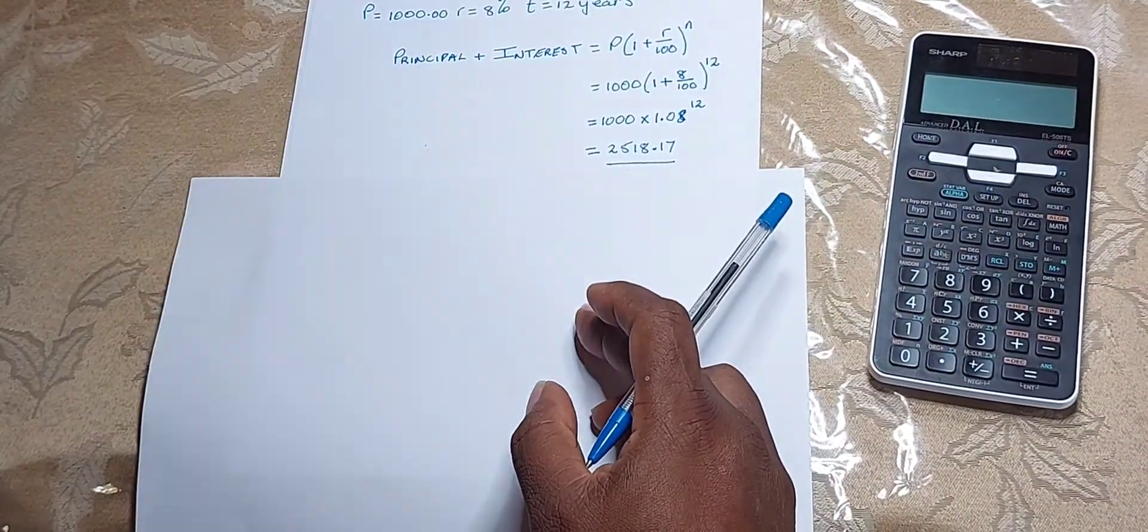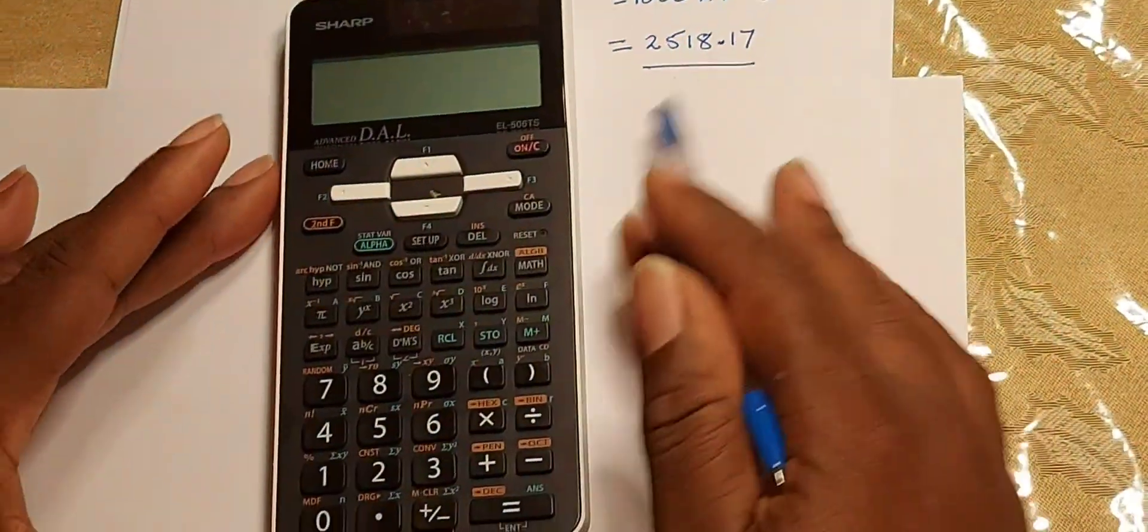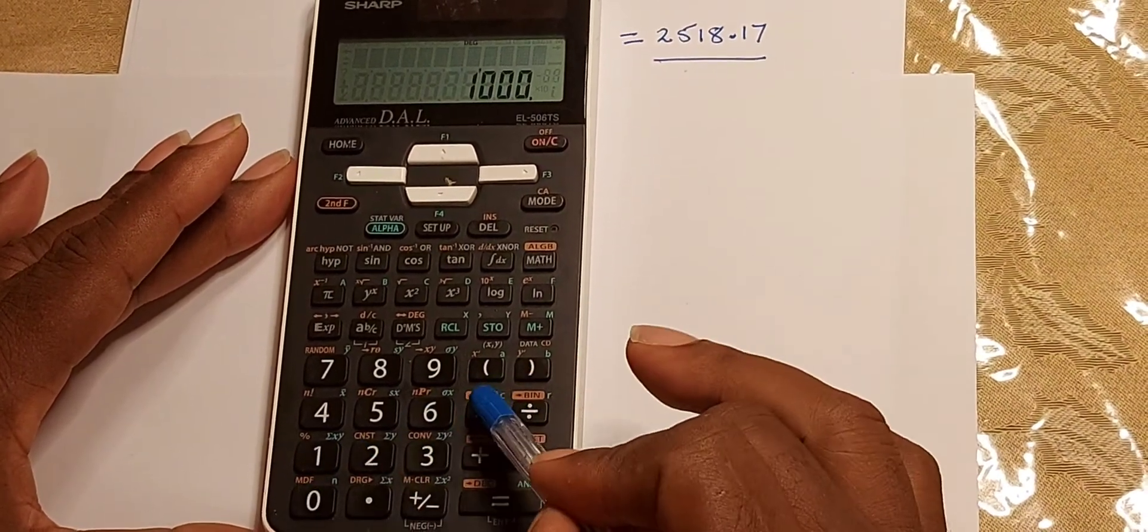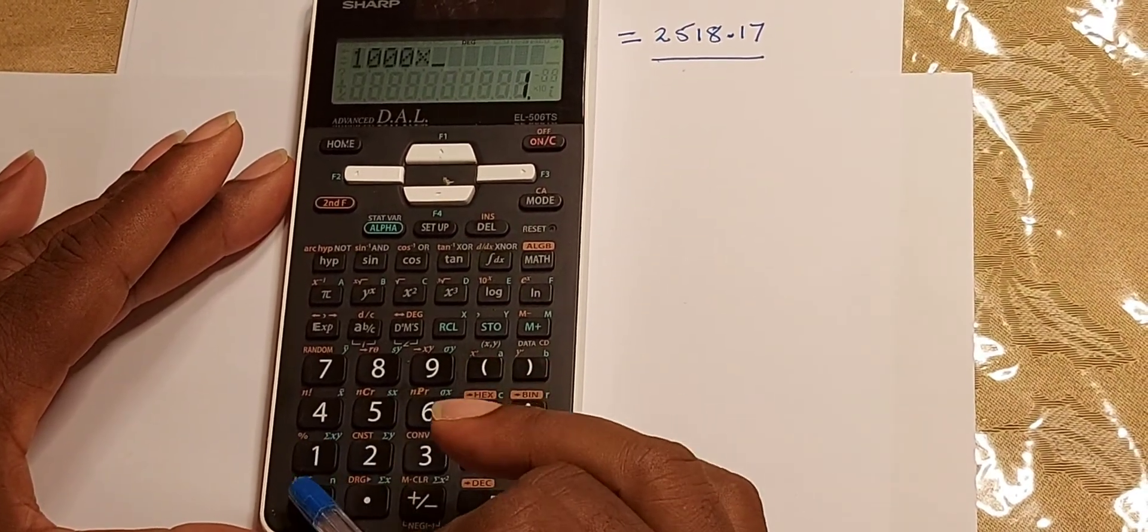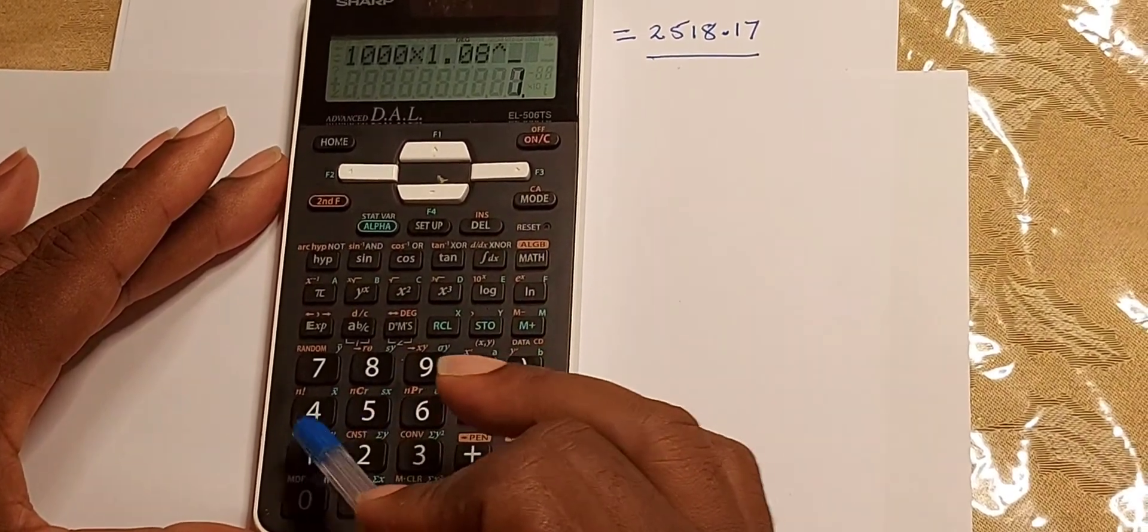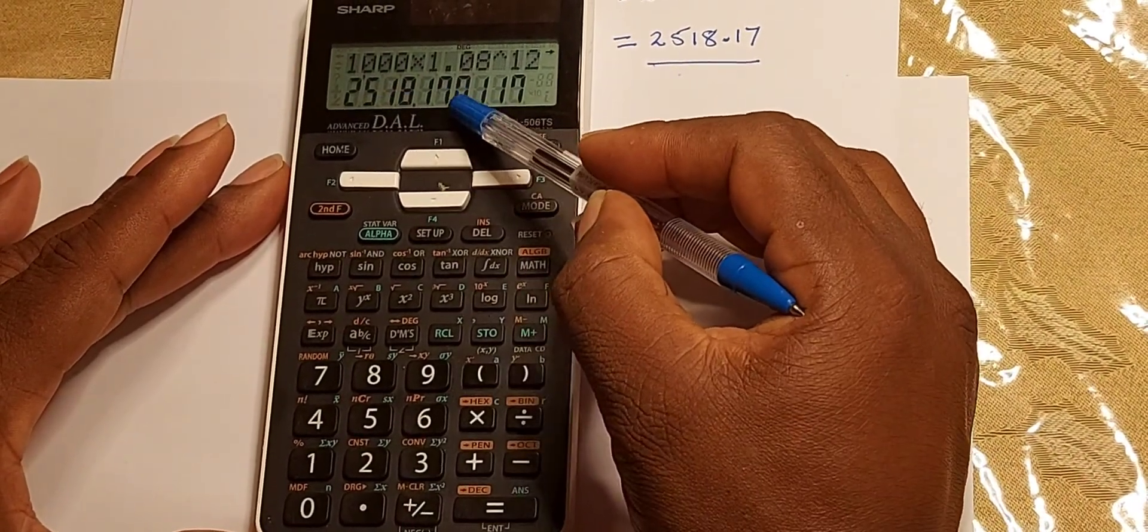Let us use the other calculator. Using the Sharp calculator, it is pretty much the same. 1000 multiplied by 1.08 to the power of 12 equals 2518.17.